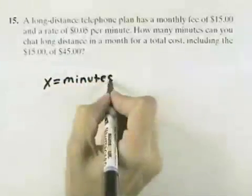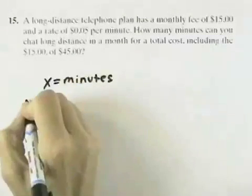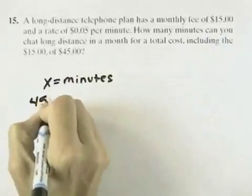We need to think of a way to relate these with our equation. Well, we know that the total amount of our bill should be $45.